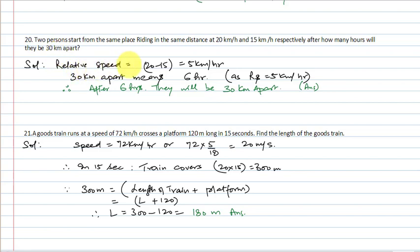Since both are moving in the same direction, relative speed = 20 − 15 = 5 km per hour. That means one person is moving 5 km per hour faster than the other. To be 30 km apart, the time required = 30/5 = 6 hours.